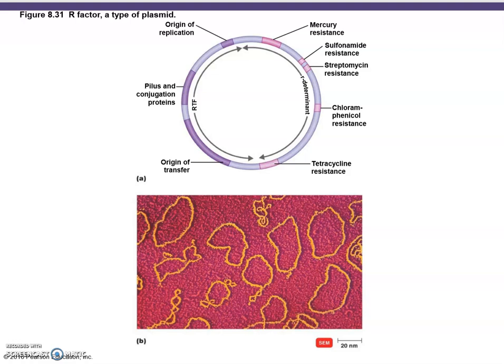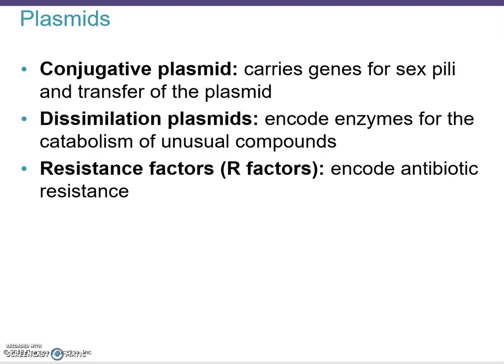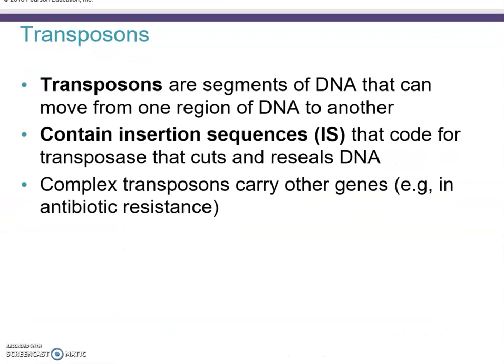This diagram shows F factors, a typical type of plasmid, and where they might insert on bacterial chromosomes. There are different types of plasmids: conjugative plasmids carry genes for sex pili and transfer of the plasmid; dissimilation plasmids include enzymes for catabolism of unusual compounds; and resistance factors are plasmids that encode antibiotic resistance genes.